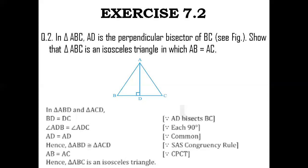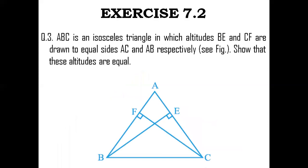I believe this solution was easy to understand. Let's get into question number 3. It says: ABC is an isosceles triangle in which altitudes BE and CF are drawn to equal sides AC and AB respectively. From the figure, ABC is an isosceles triangle where equal sides are AC and AB, and BE and CF are altitudes. BE is perpendicular to AC and CF is perpendicular to AB. We have been asked to prove that BE is equal to CF.